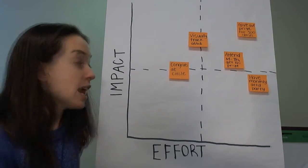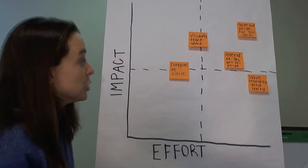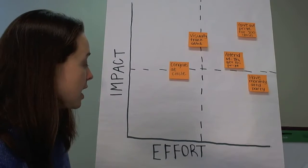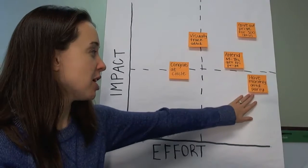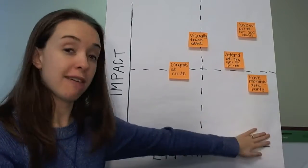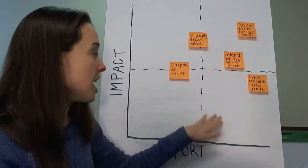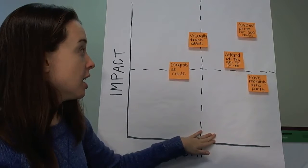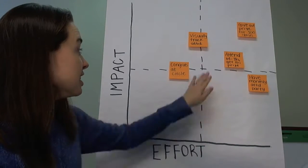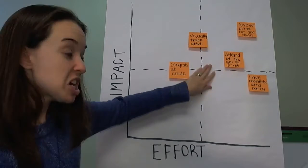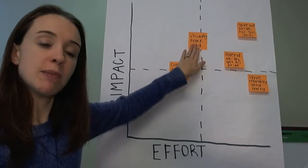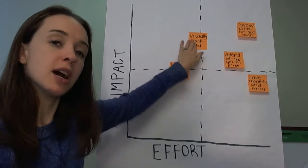As we look at this impact effort matrix, we see a few things. The monthly attendance party isn't the way to go because it is a lot of effort but not as high impact. And visually tracking attendance is kind of in the middle of effort but seems to be high impact, so that might be something we want to talk more about.